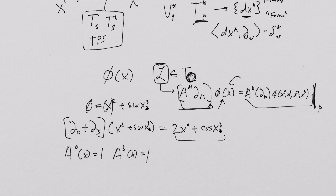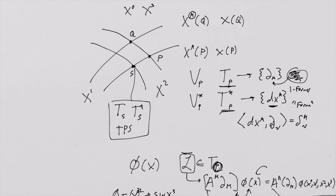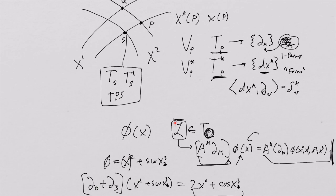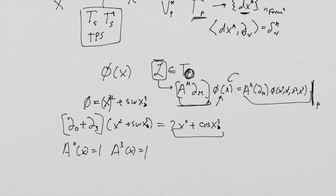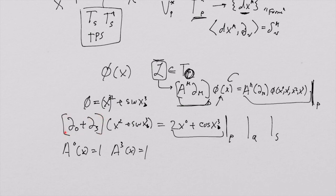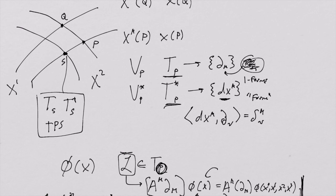This function is everywhere in spacetime—every place that function is going to represent this differential operator acting on this function of spacetime. At point P, this is evaluated at P. At point Q, this is evaluated at Q. At point S, this is evaluated at S. When you do these evaluations, you get different numbers in each circumstance, which is why this choice of vector basis is not just swapping one symbol for another.